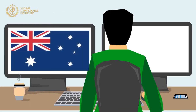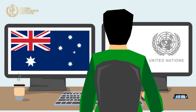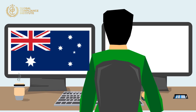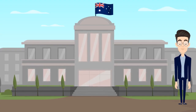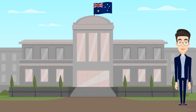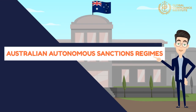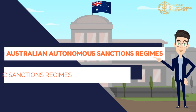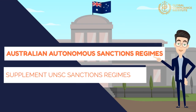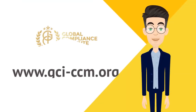Fourthly, Australia. Australia implements United Nations Security Council (UNSC) sanctions regimes and Australian autonomous sanctions regimes. The Australian government has decided to implement Australian autonomous sanctions regimes as a matter of Australian foreign policy. Australian autonomous sanctions regimes may supplement UNSC sanctions regimes or be separate from them.